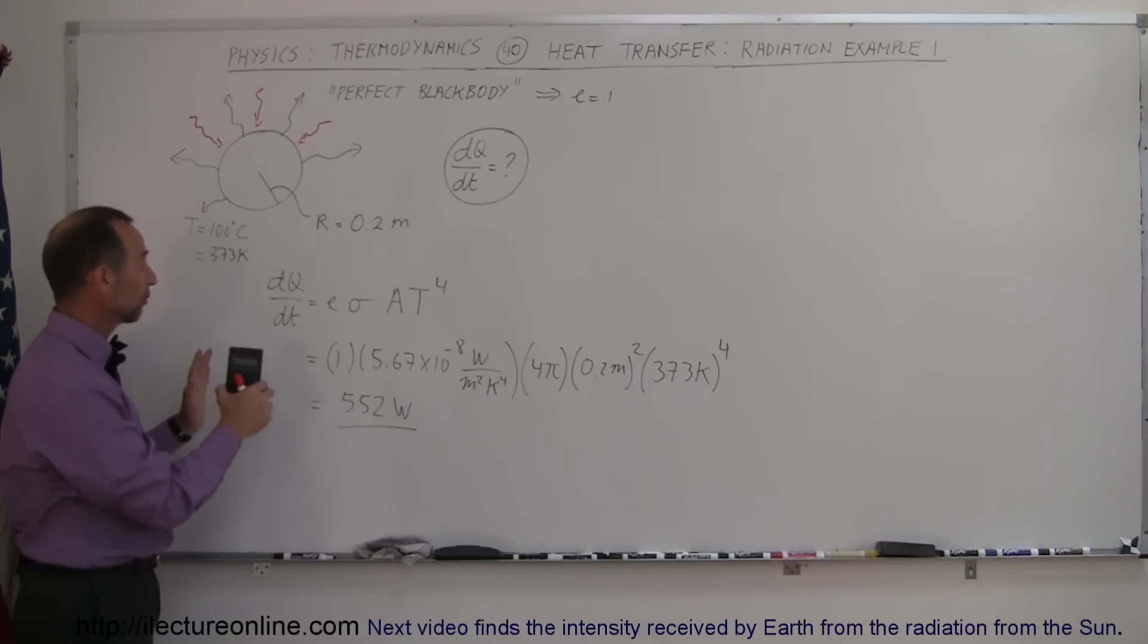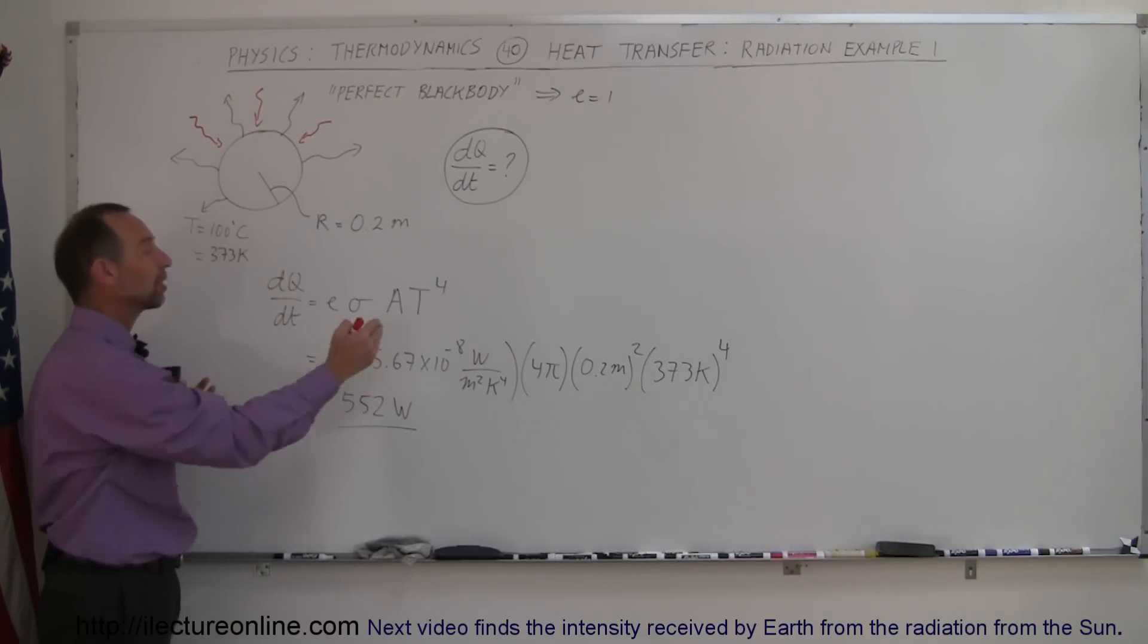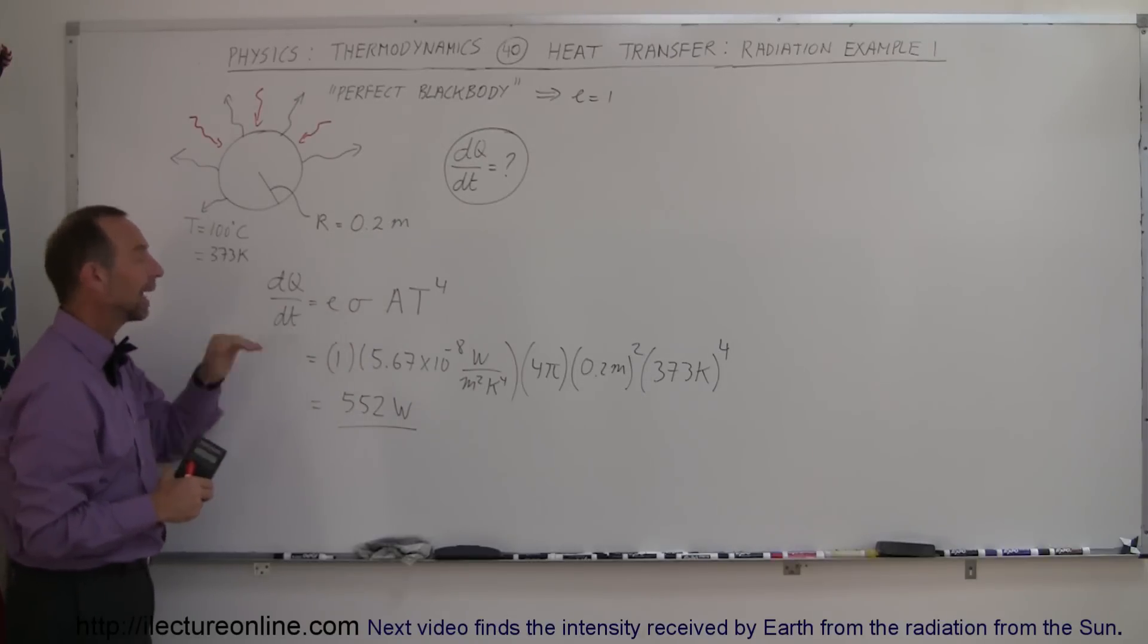But to keep things simple, the first thing we want to do is simply calculate how much heat is radiated away from an object based upon its temperature, its surface area, and its emissivity. And that's how you do that.